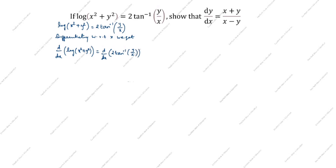We will differentiate log(x² + y²). Just as the derivative of log(x) is 1/x, the derivative of log(x² + y²) is 1/(x² + y²), multiplied by the derivative of (x² + y²) by the chain rule. On the right side, 2 is a constant, taken outside.